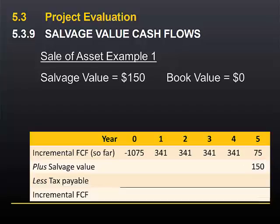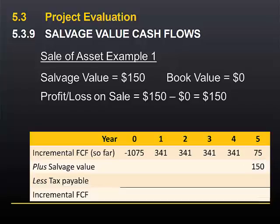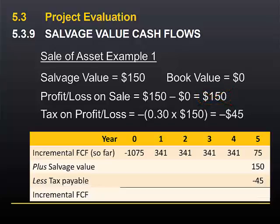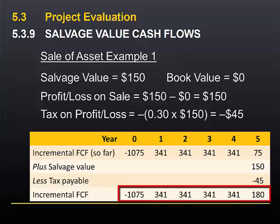The book value is $0, so the profit is $150 minus zero, or $150. The tax on the profit is therefore the negative of the tax rate, 30%, times $150, or negative $45 — a cash outflow. It's very important to understand the difference between a cash flow and something that is not a cash flow. The salvage value is cash received and is therefore a cash flow. The profit, although it happens to be the same number because the book value is zero, is not a cash flow — it's an accounting entry. However, the tax that we pay on the profit is a cash flow and gets recorded. So these are the incremental free cash flows, including the salvage value and including the tax on the profit on the sale of the asset.